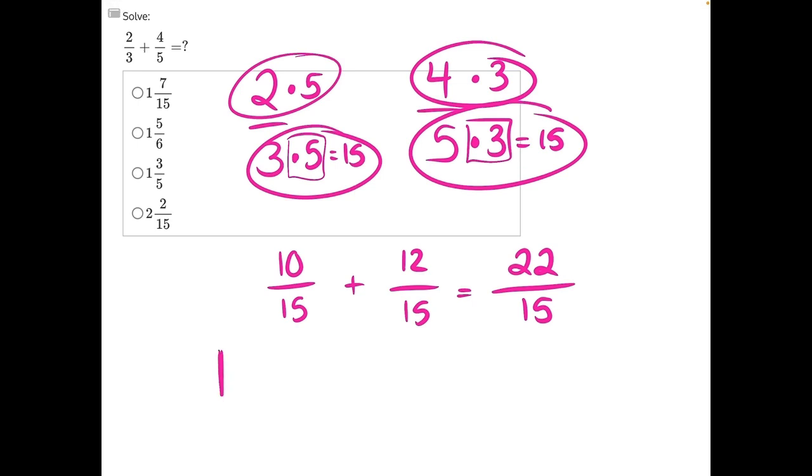So, we're pulling out 1 whole, or 15 15ths. We're pulling that out of the fraction. And what's left over, if we were to subtract 15 from 22, we would be left with 7 15ths. 1 whole and 7 15ths. Making answer choice A our correct answer.